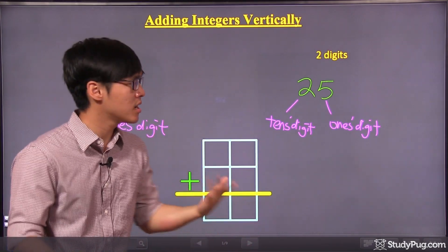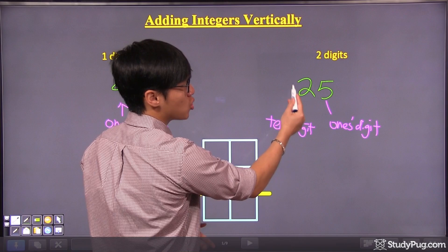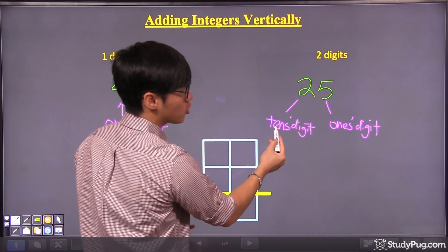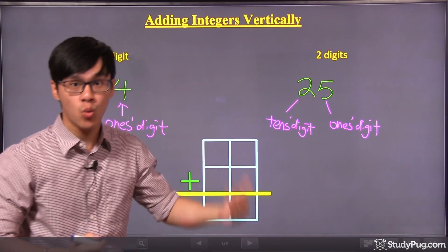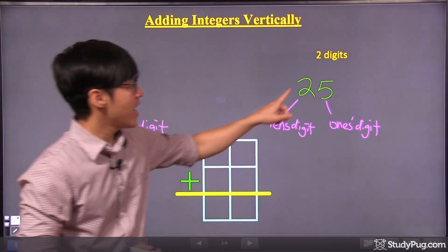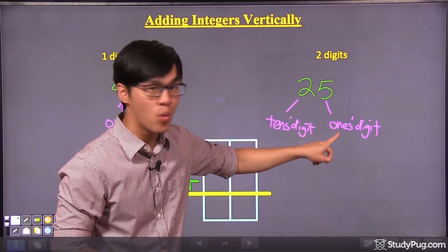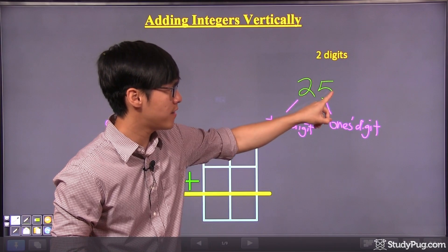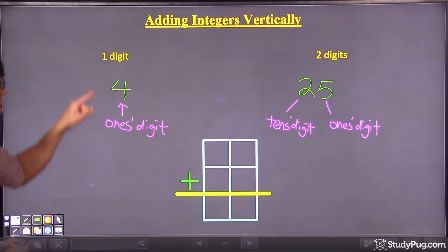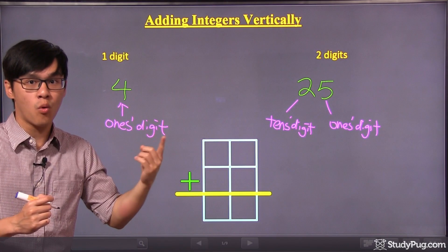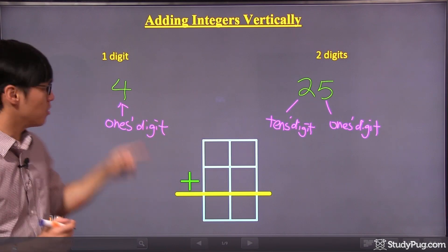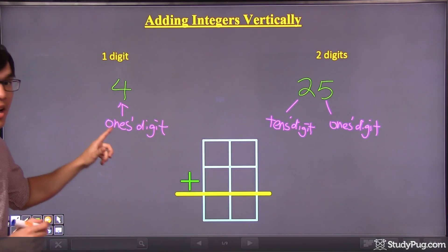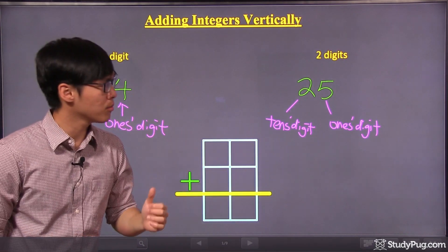It actually makes sense, because how do you read this number? It's twenty-five. The two stands for two of the tens, which gives us twenty. And the five is five of the ones, so it's five. So twenty-five makes sense. And here, four is just four ones — four times one gives us four. So that's the ones digit. These are the terminologies.